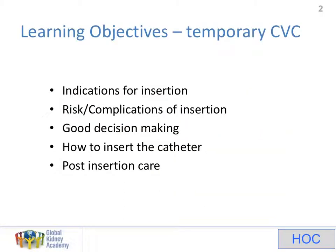Let's look at the learning objectives for this talk. I've put five areas that I want to cover. The first is looking at the indications for insertion of a temporary catheter. The second area is the risks and complications associated with insertion. The third objective is looking at all the decision making you need to think through before you insert a catheter. The fourth is actually how to insert the catheter, split into five subsections. And then finally, post-insertion care.